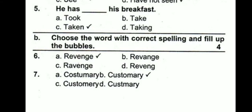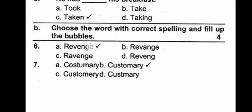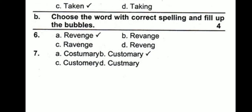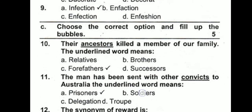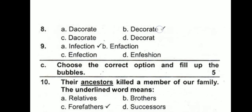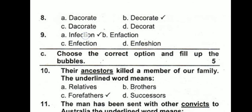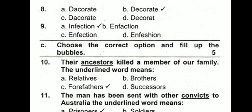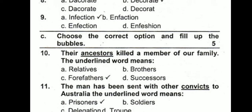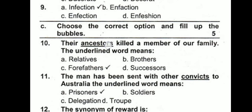Choose the word with correct spelling. For 'revenge' — A is the correct option. For 'customary' — B is the correct option. For 'decorate' — B is correct: D-E-C-O-R-A-T-E. For 'infection' — that is the correct option. Learn spellings whenever you study; they help not only in the objective paper but also in whatever you write.